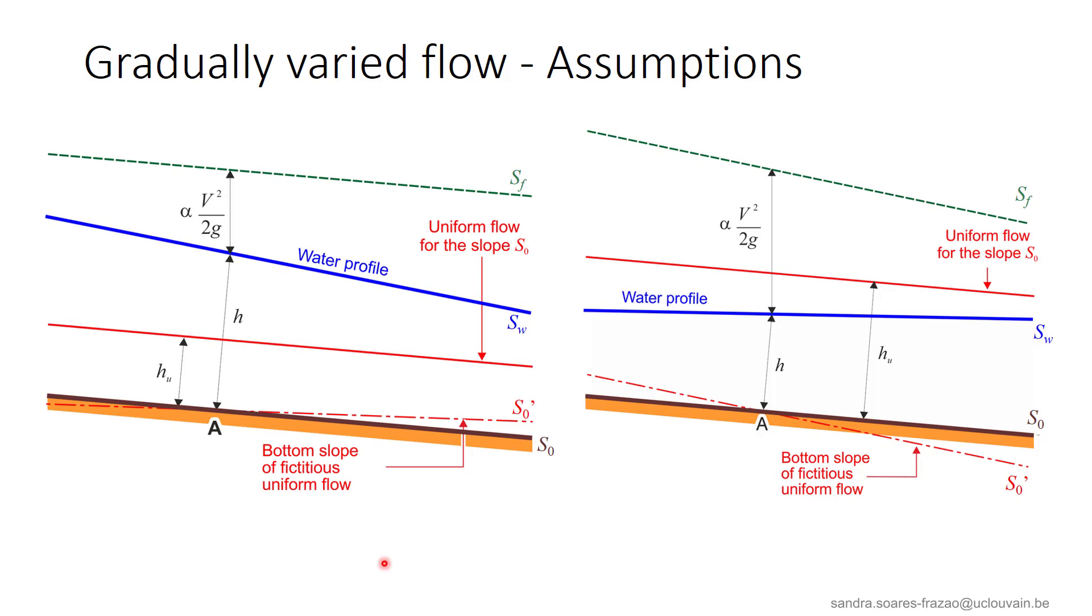We see that in the first case here on the left, when H is larger than HU, the flow will accelerate, it will reduce its depth and thus progressively tend to the uniform flow given by the red line. In the second case here, when H is smaller than HU, the water depth will progressively increase and then towards the red line corresponding to the uniform flow. This explains why the uniform flow is considered as the natural flow or normal flow, because on average, the energy loss expressed by SF must be equal to the energy brought by the bed slope expressed by S0.